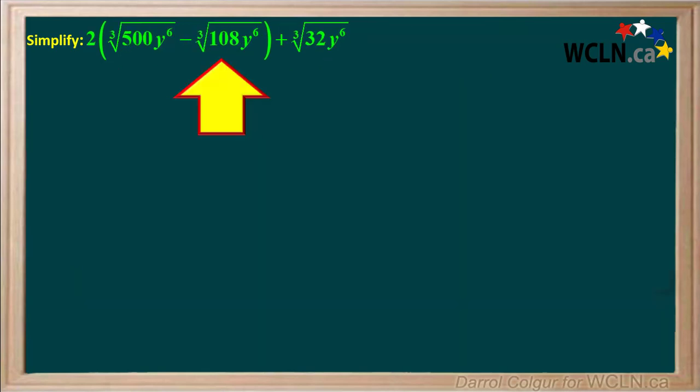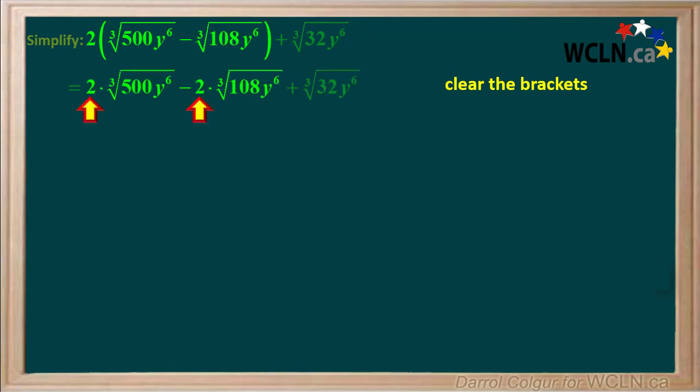Let's go through an example with cube root radicals containing numbers and variables. There is a set of brackets with a 2 on the outside of the brackets. So we can clear the brackets. We remove the brackets and multiply each of the terms that were inside by 2.